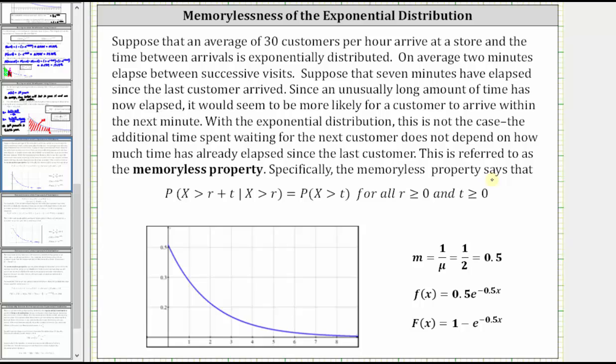Specifically, the memoryless property states that the probability that X is greater than r plus t, given X is greater than r, is equal to the probability that X is greater than t. And this is true for all r and t greater than or equal to zero.